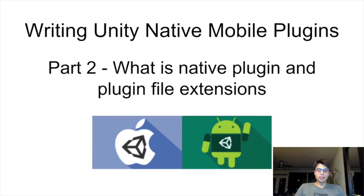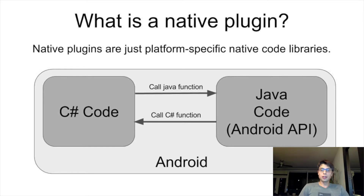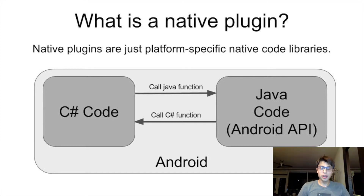Let's learn some theory about native plugins in Unity. A native plugin is a platform-specific code library. These plugins can access native system features like operating system calls that would otherwise not be accessible through the C# API. By creating a native plugin, we mean creating a native library that we can invoke functions from and receive data back to our C#.